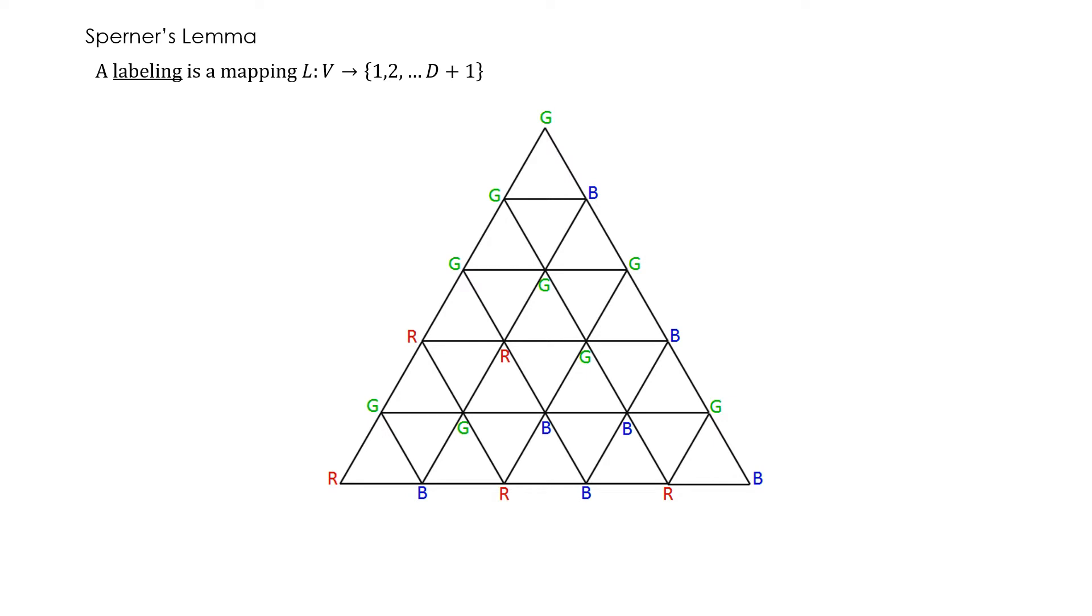A labeling is a mapping from the vertices to the indices 1, 2 until d plus 1. So in two dimensions, since we have three points, instead of assigning them labels 1, 2 and 3, let's assign labels red, green and blue, r, g and b. So each of these vertices of the simplicial subdivision is assigned a colour r, g or b.